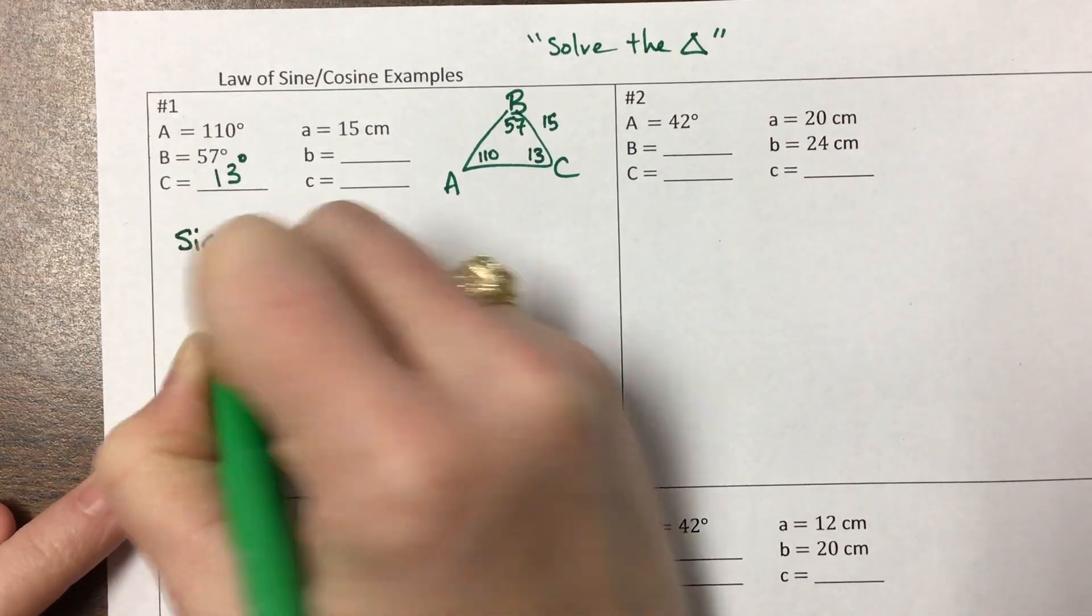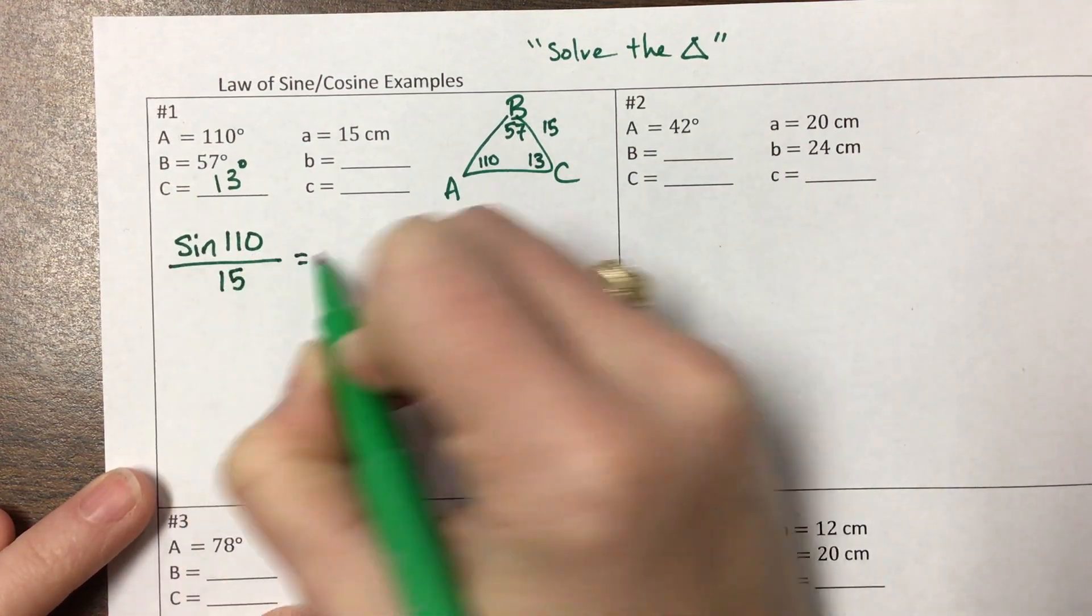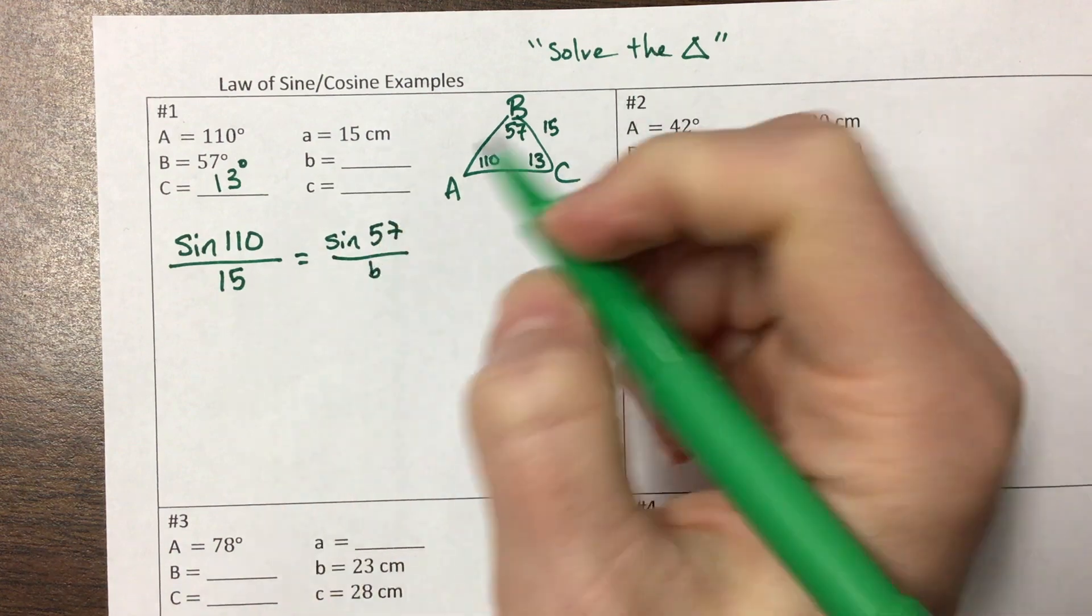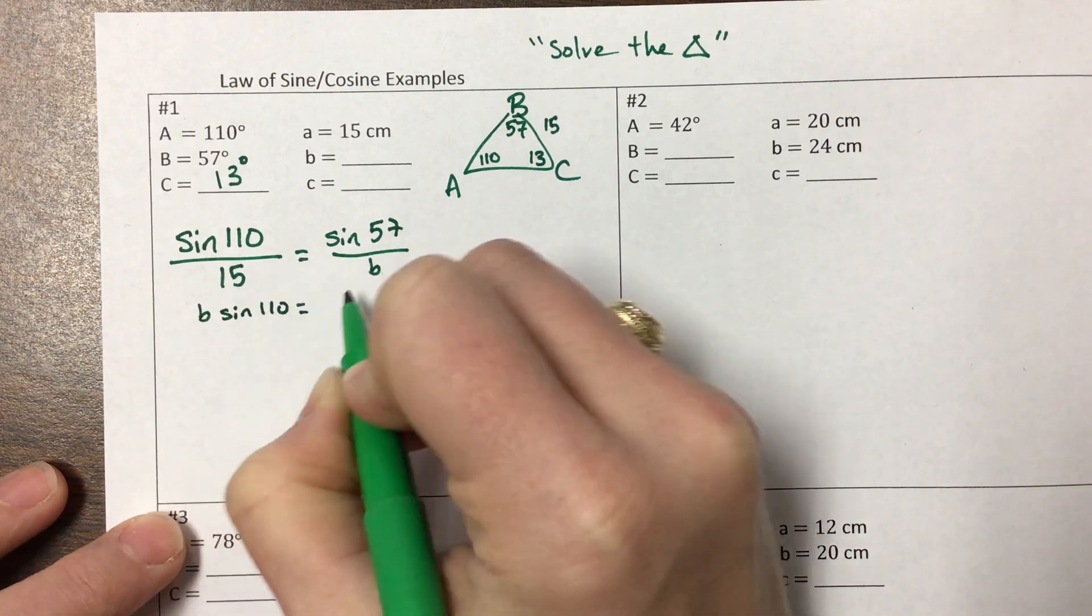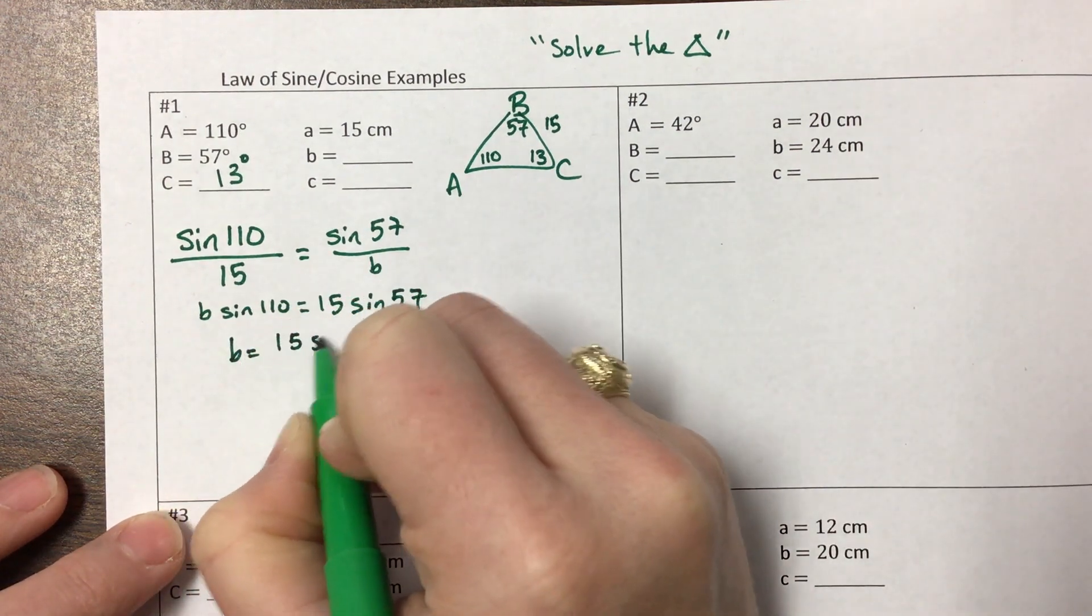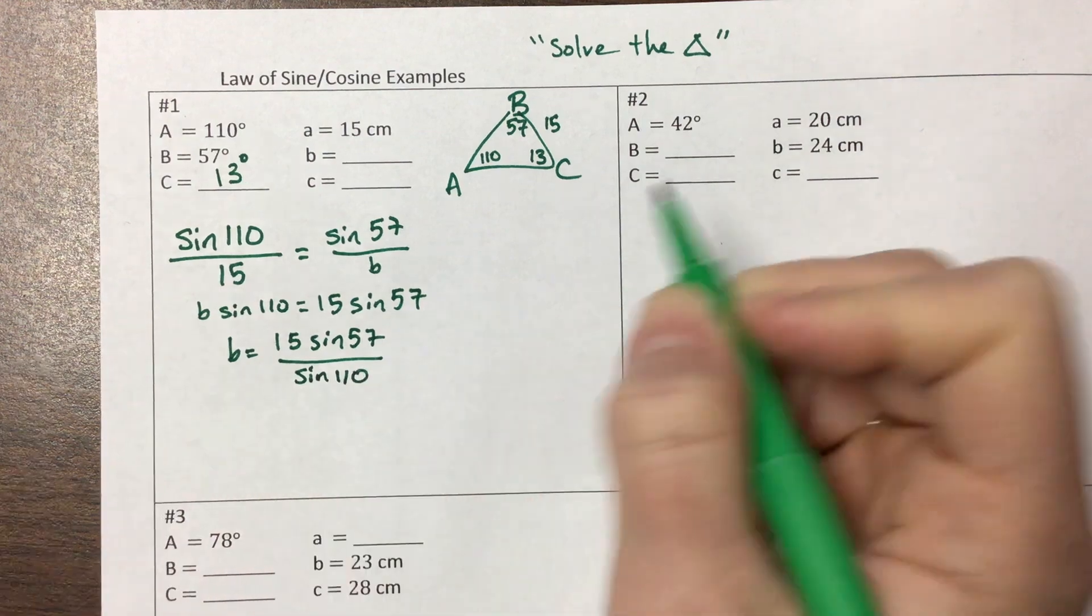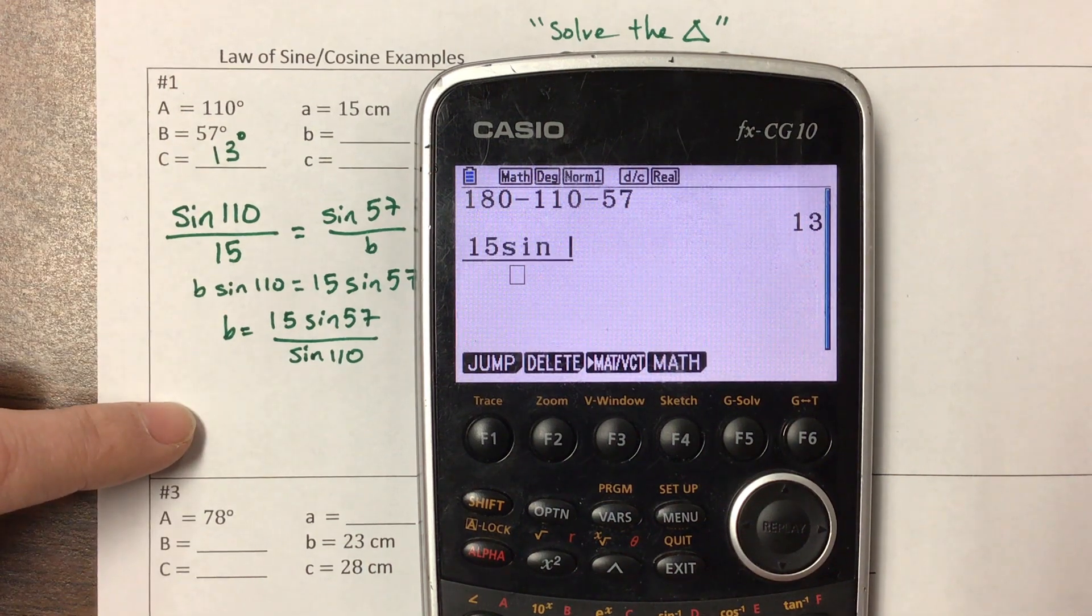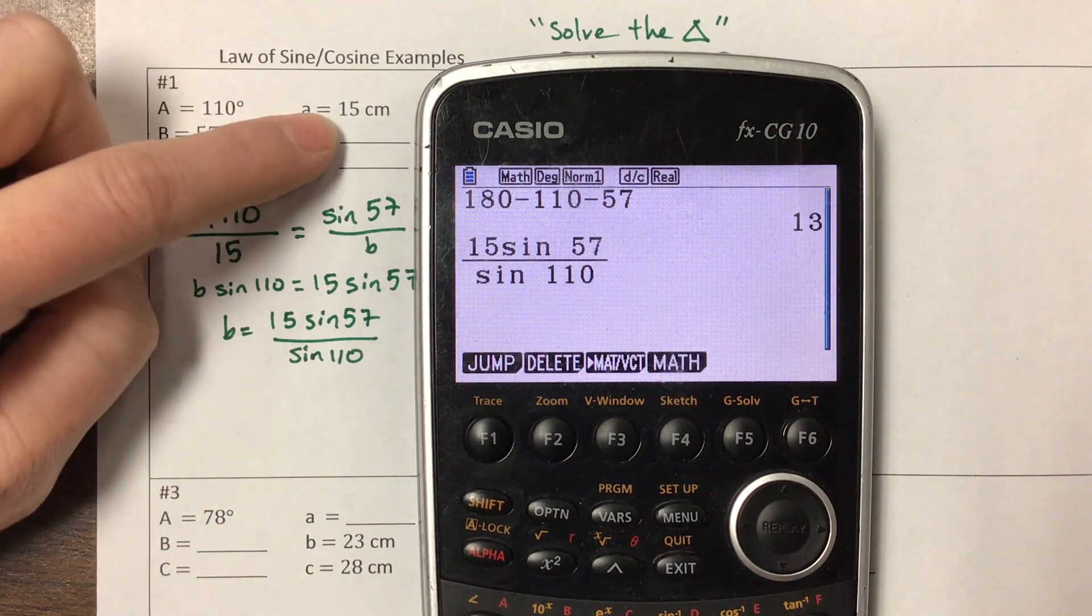So we can say sine of A, in this case angle A is 110, over 15 is equal to, let's find B first, sine of B over little b. And then when I multiply here, B sine of 110 is equal to 15 sine of 57. So B would be equal to 15 sine of 57 all over sine of 110.